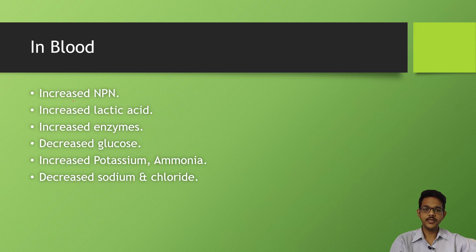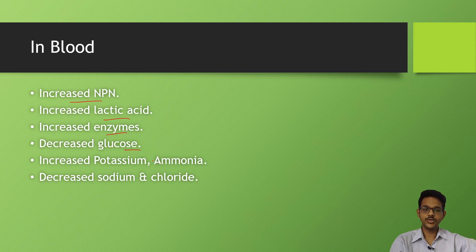In blood, there is increase in non-protein nitrogen, lactic acid, and enzymes, but decrease in glucose, potassium, ammonium, sodium, and chloride.